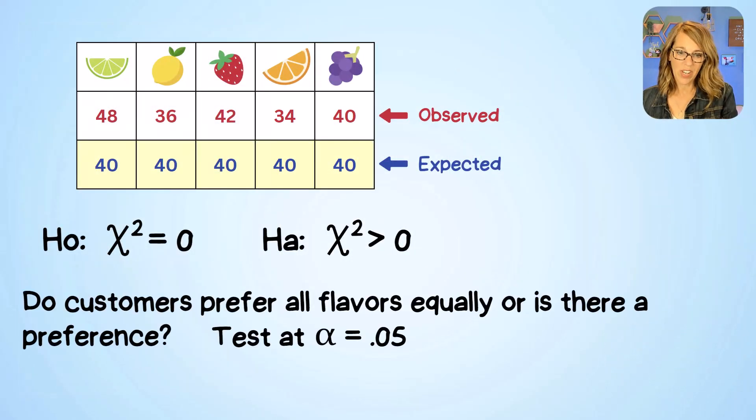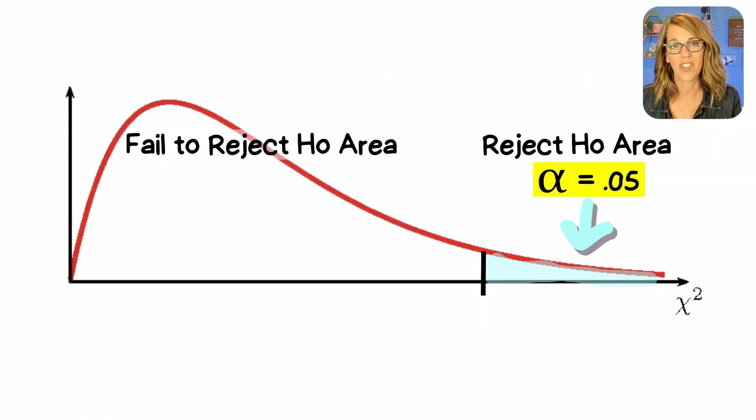Now remember that we're answering this question and we're testing at alpha equals 0.05. This is the area in my tail or our rejection region.